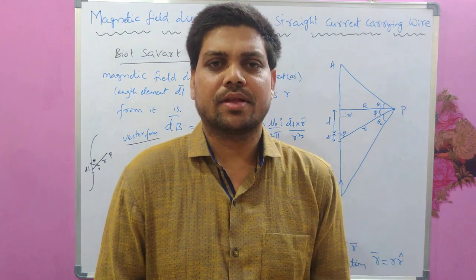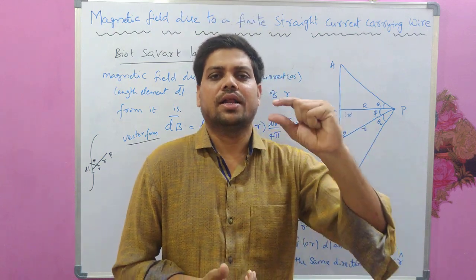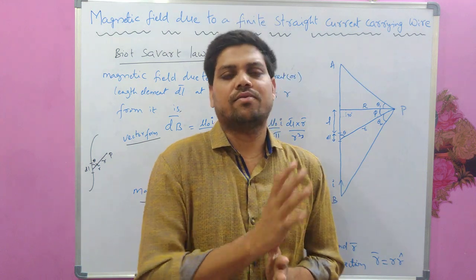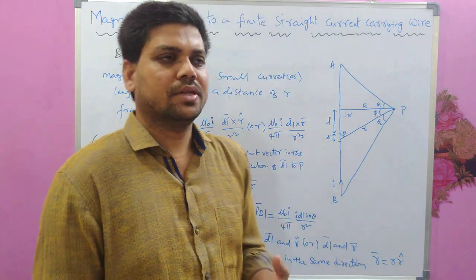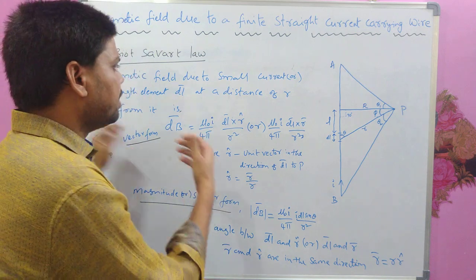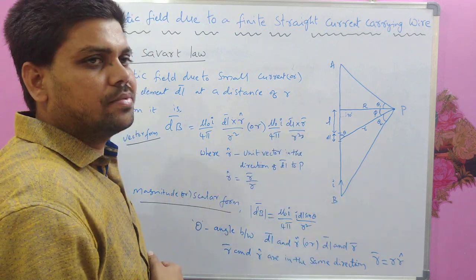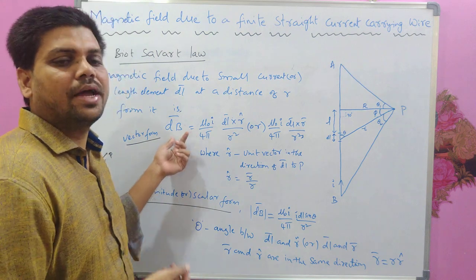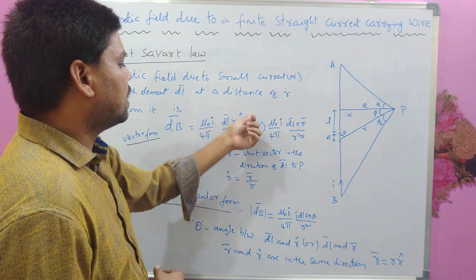In the previous video lecture I discussed Biot-Savart law, which helps us find the magnetic field due to a small current element of length DL at a point P at a distance of small r from it. Biot-Savart law gives the magnetic field produced by a small current element, and the vector form of that magnetic field — since it is a vector quantity with both direction and magnitude — is: dB = μ₀I/4π × (DL × R̂) / r².